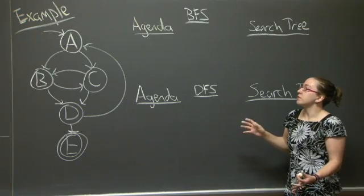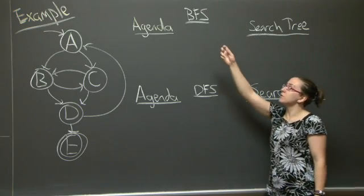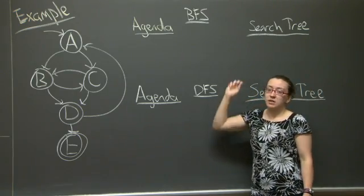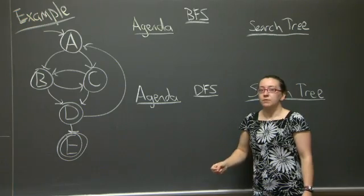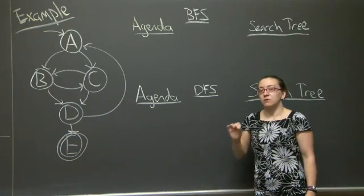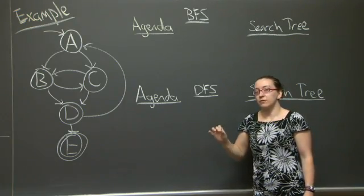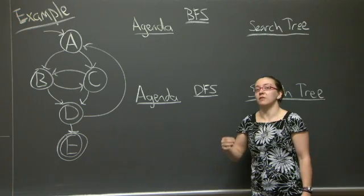Another way to think about these two types of search is that if you're doing breadth-first search, then your agenda acts as a queue. First items in, or first partial paths that you discover, are the first items out, or the first partial paths that you end up expanding.